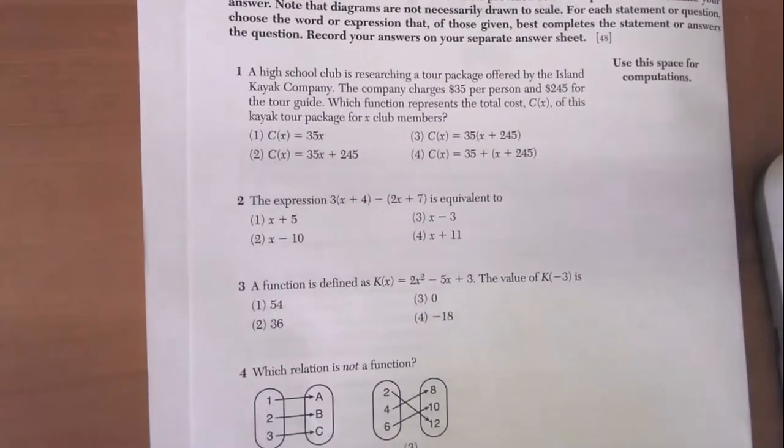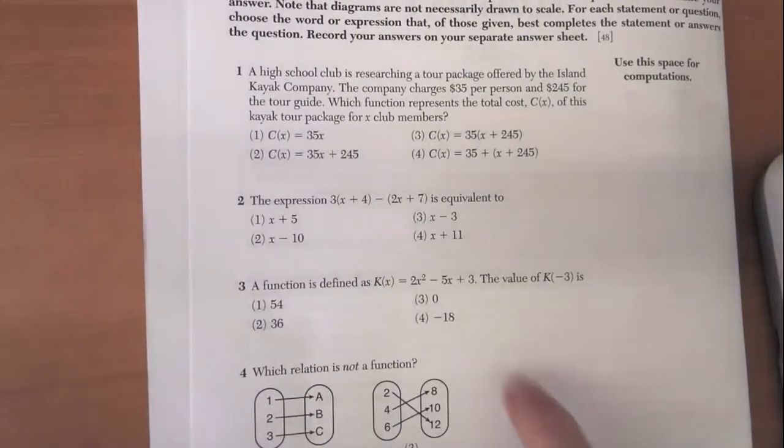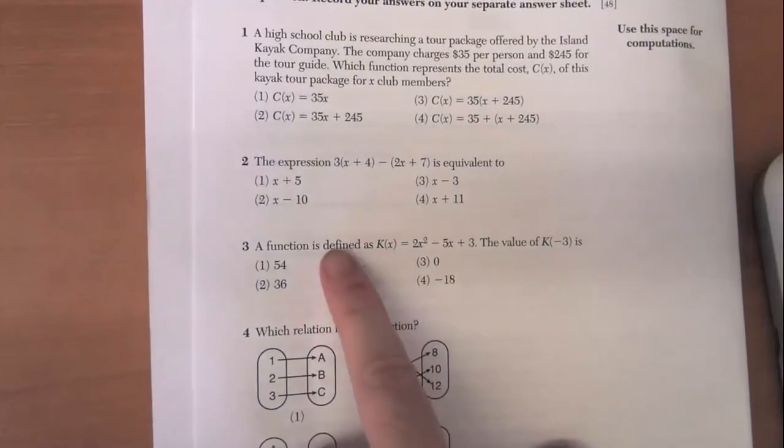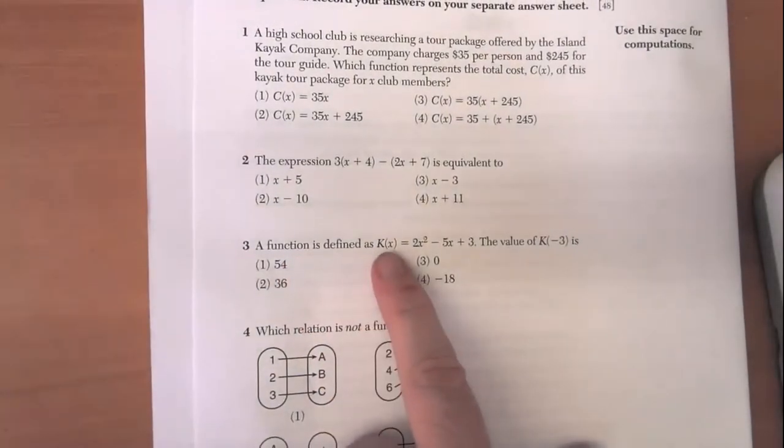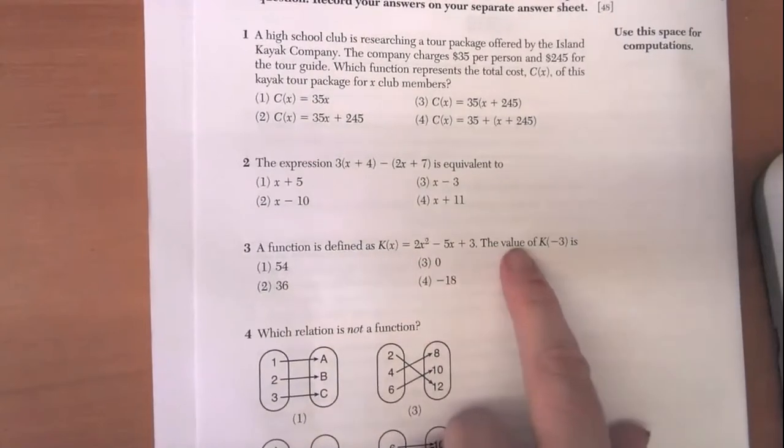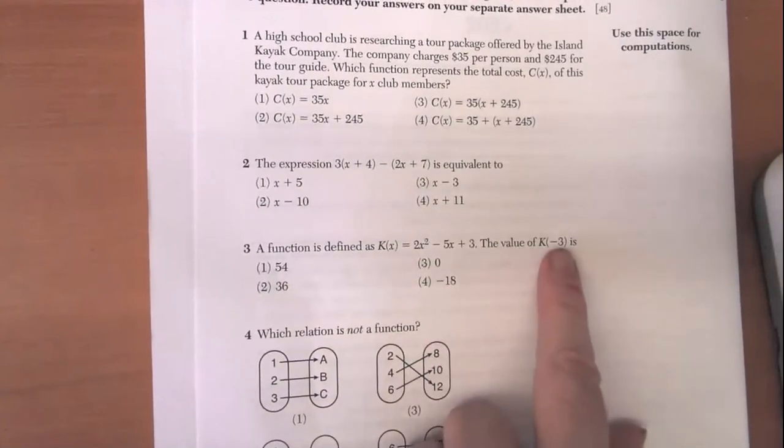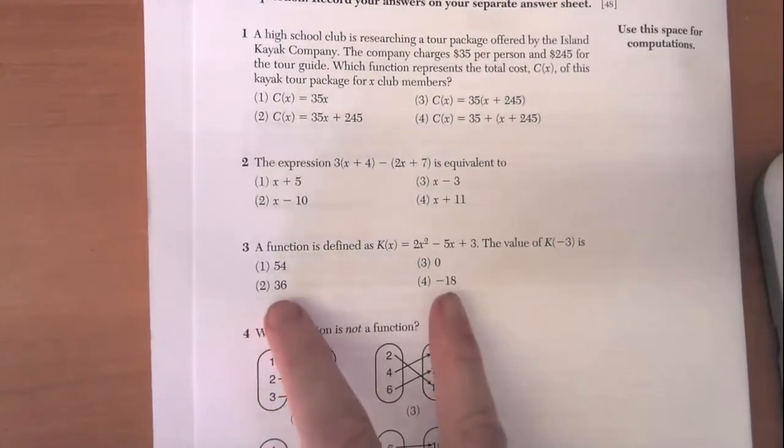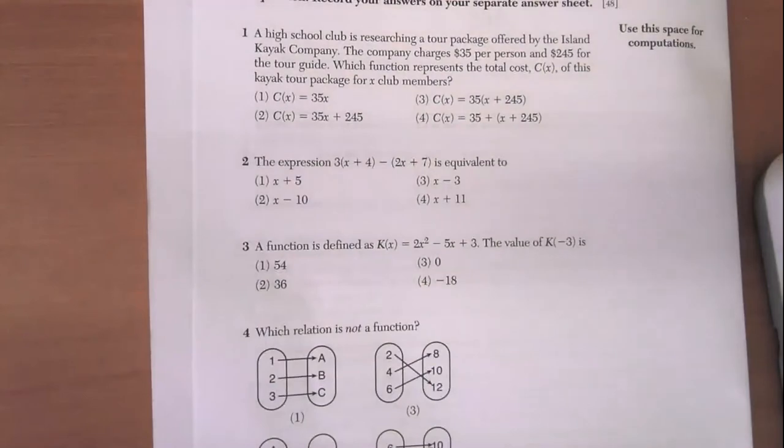First, this is from the June 2021 Regents exam. Problem 3 says the function is defined as k(x) = 2x² - 5x + 3. The value of k(-3) is one of these four options. Let's see how we can use the calculator to evaluate that function at -3.